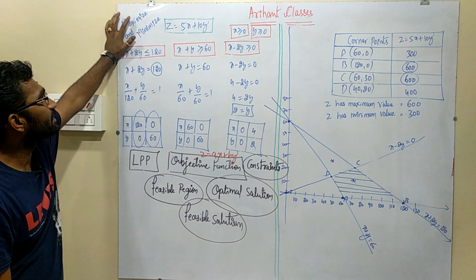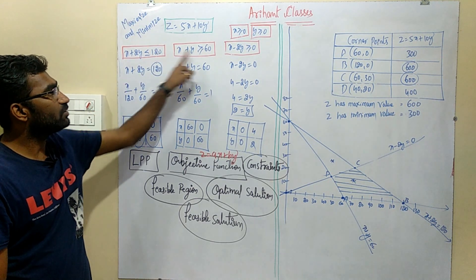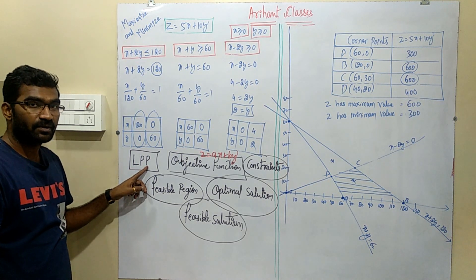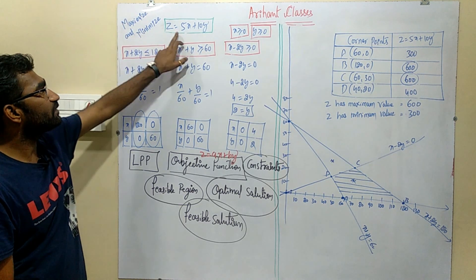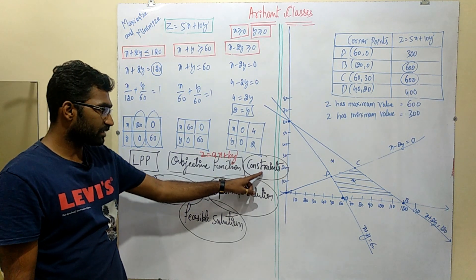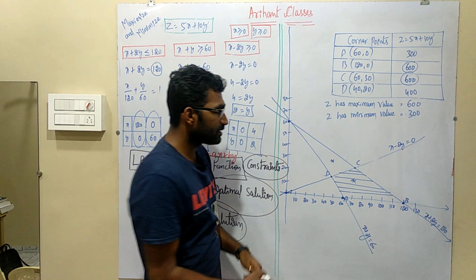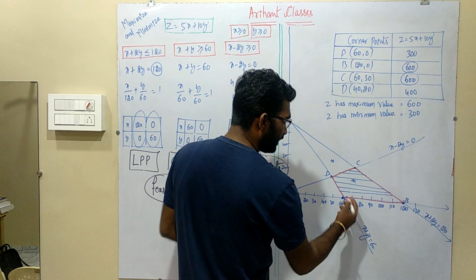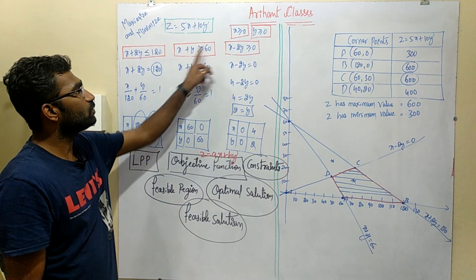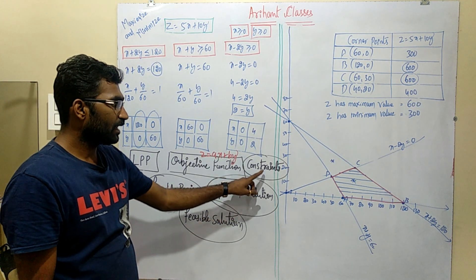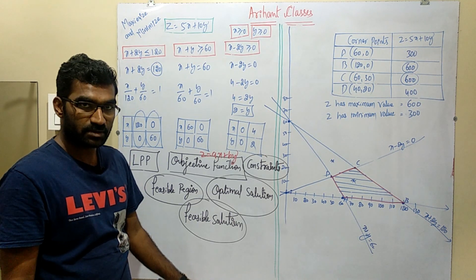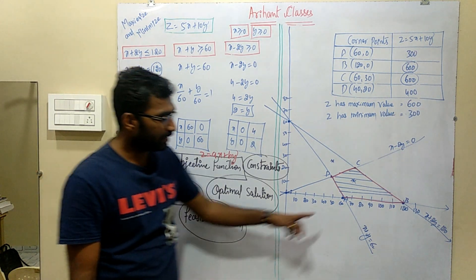The definition of a linear programming problem: it is the problem in which we find the maximum and minimum value of the objective function z equals ax plus by, where a and b are constants, subject to given constraints. Constraints are the linear inequalities or equations in the linear programming problem — for example, lines 1, 2, 3, 4, and 5 in our problem.